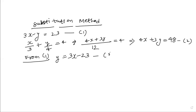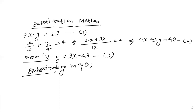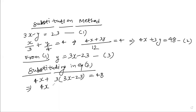From equation 1, making y the subject gives y = 3x − 23. Call this equation 3. Now substitute this value of y into equation 2 (the other equation). So we write: 4x + 3(3x − 23) = 48, which gives 4x + 9x − 69 = 48, and therefore 13x = 117.